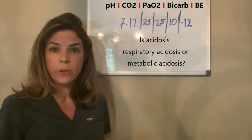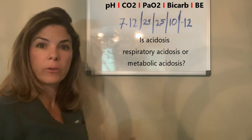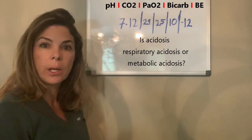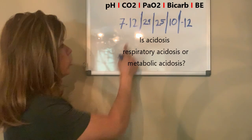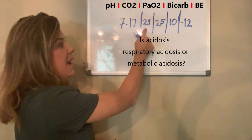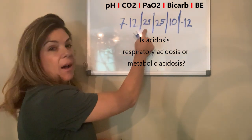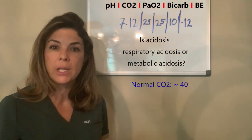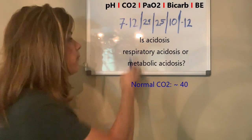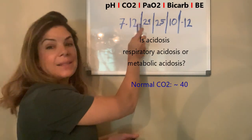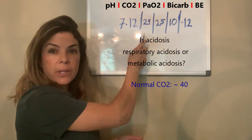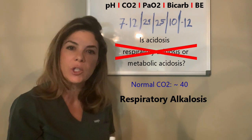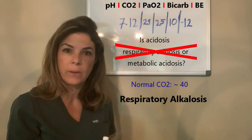Now what's causing the acidosis? Is it respiratory acidosis? Let's look at the PaCO2 — that is 29. A normal PaCO2 is about 40, so the fact that this is less than 40 means that this is actually respiratory alkalosis.